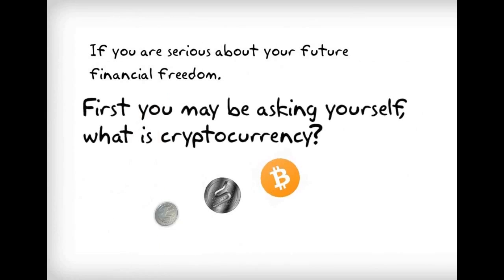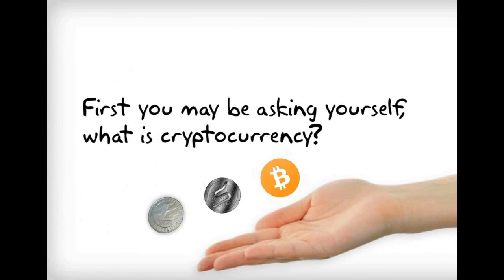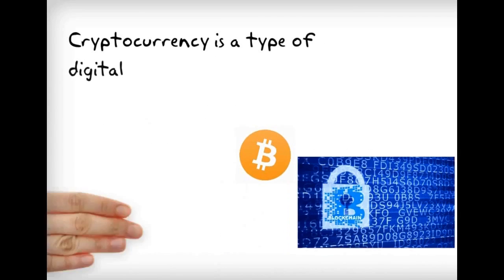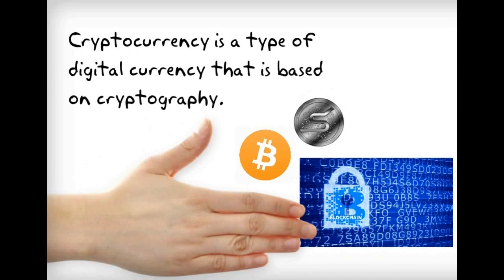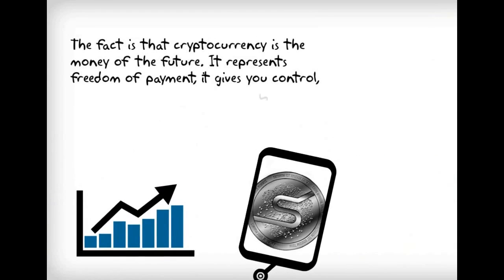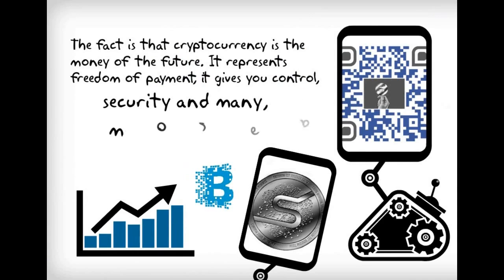First, you may be asking yourself, what is cryptocurrency? Cryptocurrency is a type of digital currency that is based on cryptography. The fact is that cryptocurrency is the money of the future. It represents freedom of payment and gives you control, security, and many more advantages.